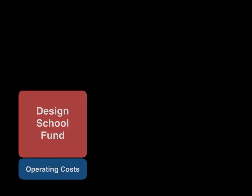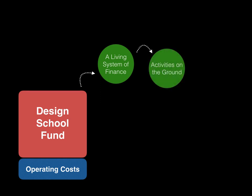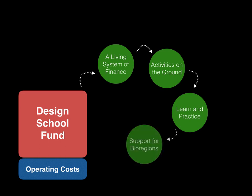The Design School Fund is set up as a living system of finance. Money that comes in from paying membership dues enables us to support members of the Design School to engage in activities on the ground. They are able to apply for funding that will help them to do regenerative work in real-world bioregions, so that they can engage in learning and practice at the same time in a manner that supports the bioregions that we're working in. All of this together creates a robust circulation of financial flows, knowledge, capacity, and action as the way that the Design School engages in bioregional work on the ground together with online supporting processes.